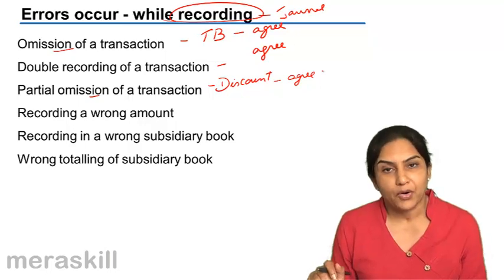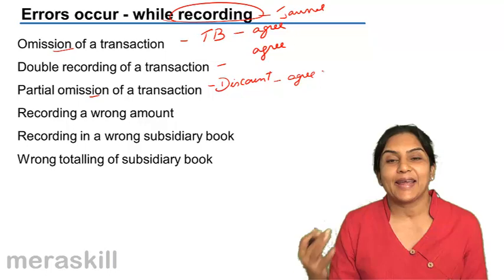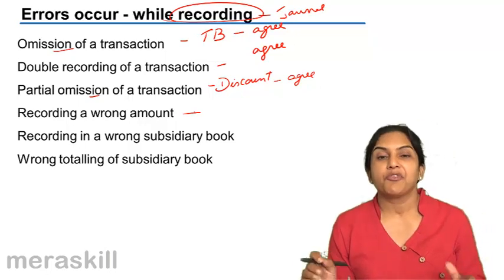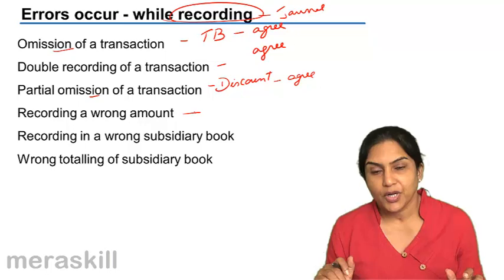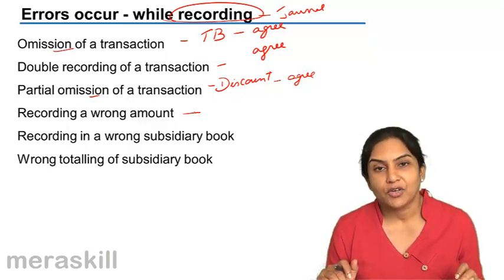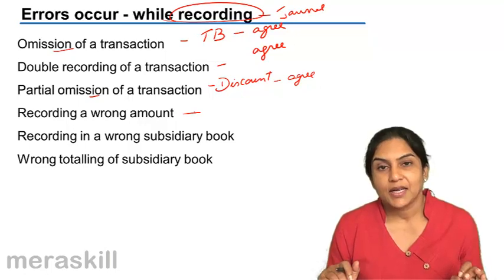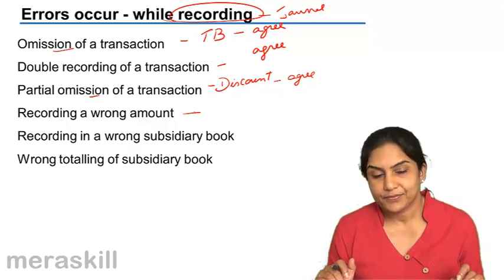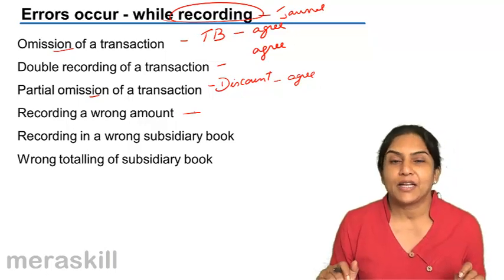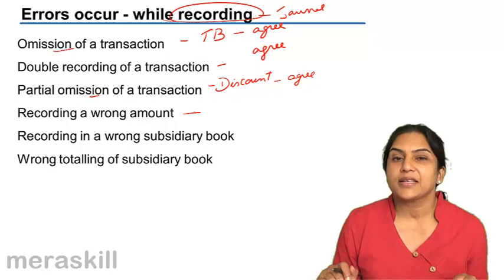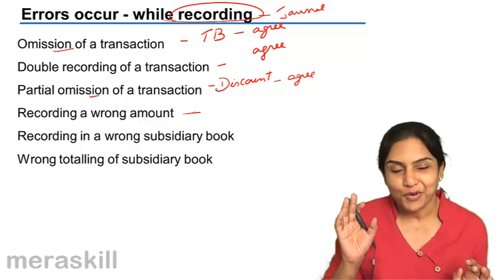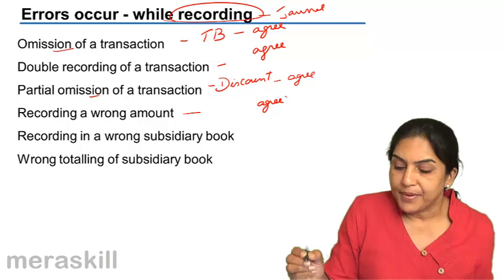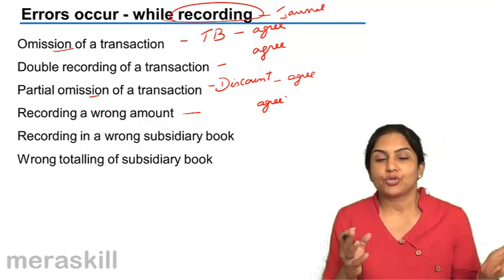We may also record a wrong amount — for example, instead of 10,000 we record 1,000 in the purchase day book. Purchases will be understated and the supplier's account will also be understated. Therefore, the trial balance will agree, even though both the purchase account and the supplier's account are wrong. Since the original amount entered is wrong, the posting is also wrong, so both sides of the trial balance would still agree.